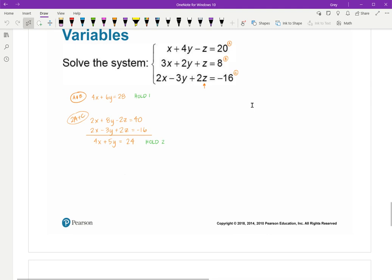If I take that first hold equation and multiply it by negative 1, I'm going to get negative 4X minus 6Y equals negative 28. And I'm going to add those together. My X's are going to fall out. 5Y minus 6Y is negative Y equals negative 4. Multiply both sides by negative 1. So, Y equals 4.